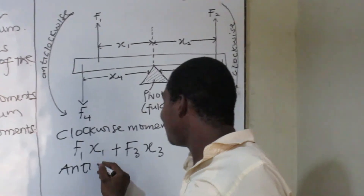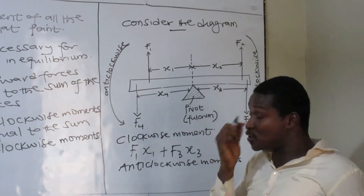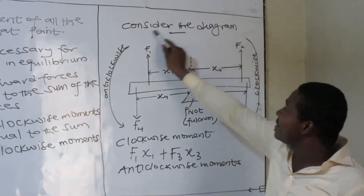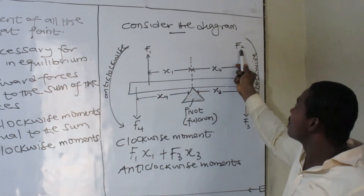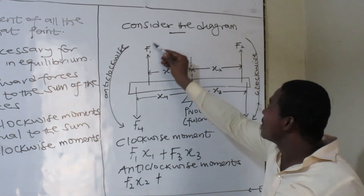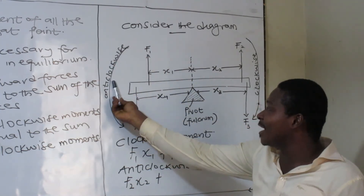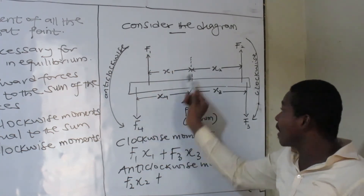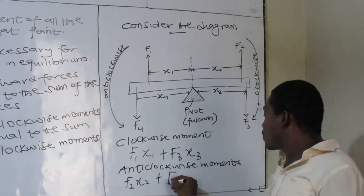Now let's look at the anticlockwise moments. Going anticlockwise, F2 is part of the anticlockwise — that is my line of action — so I have F2 times X2. What about F1? F1 is not qualified to be anticlockwise. If F1 should move in the anticlockwise direction, there is no distance to the line of action — the line of action is behind it. So F1 has no anticlockwise moment. There is F4 — look at its direction. F4 will have a force and a distance to the line of action, so I have F4 times X4.